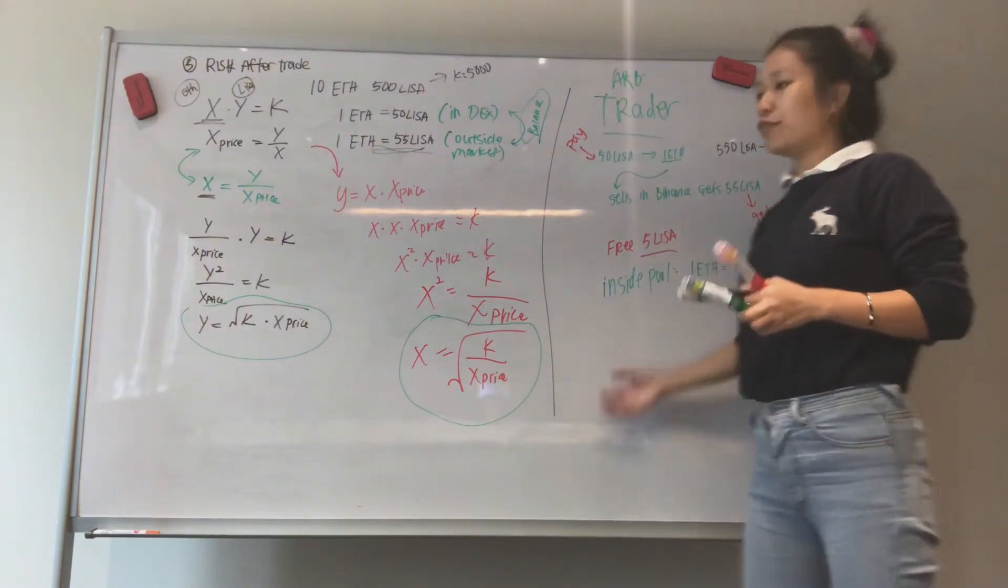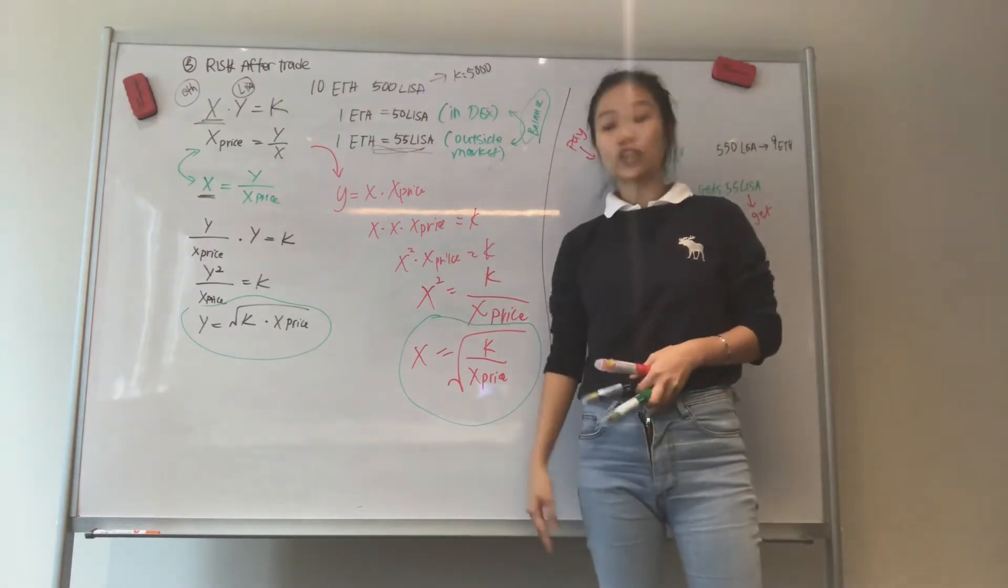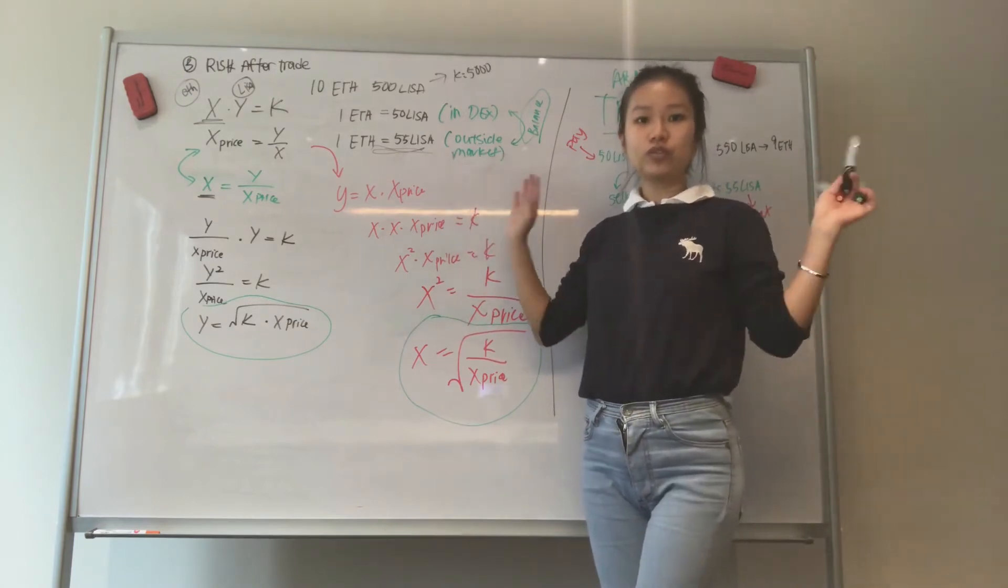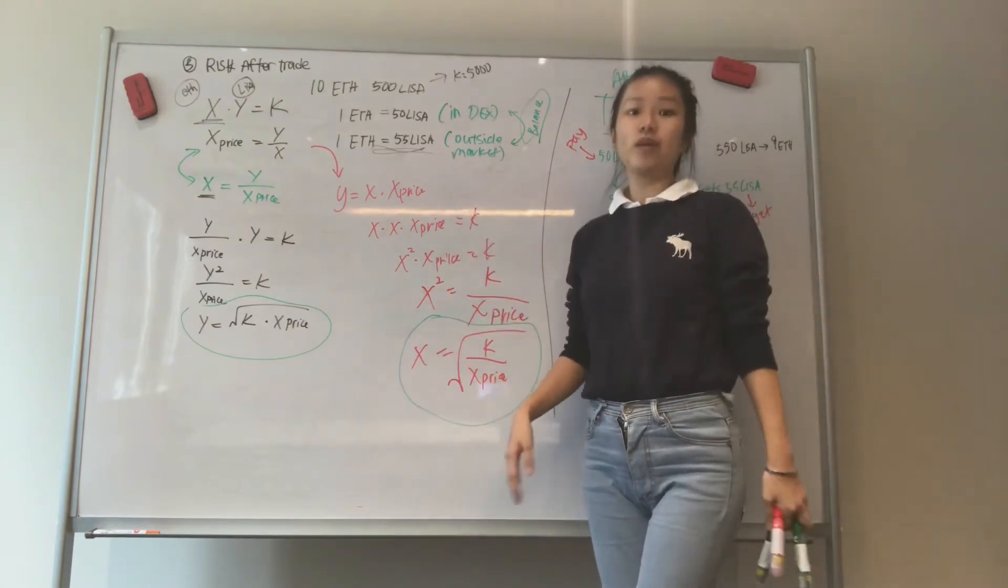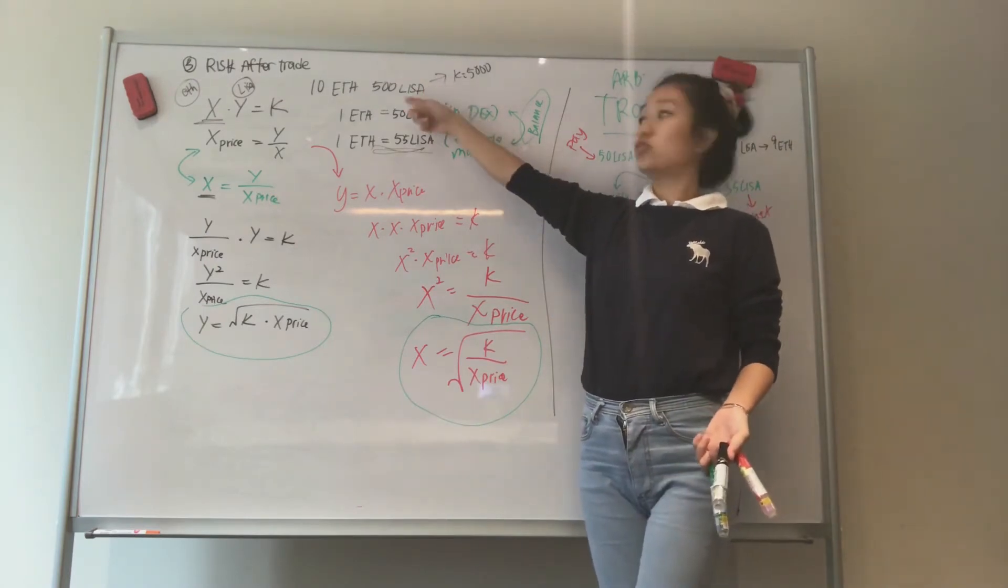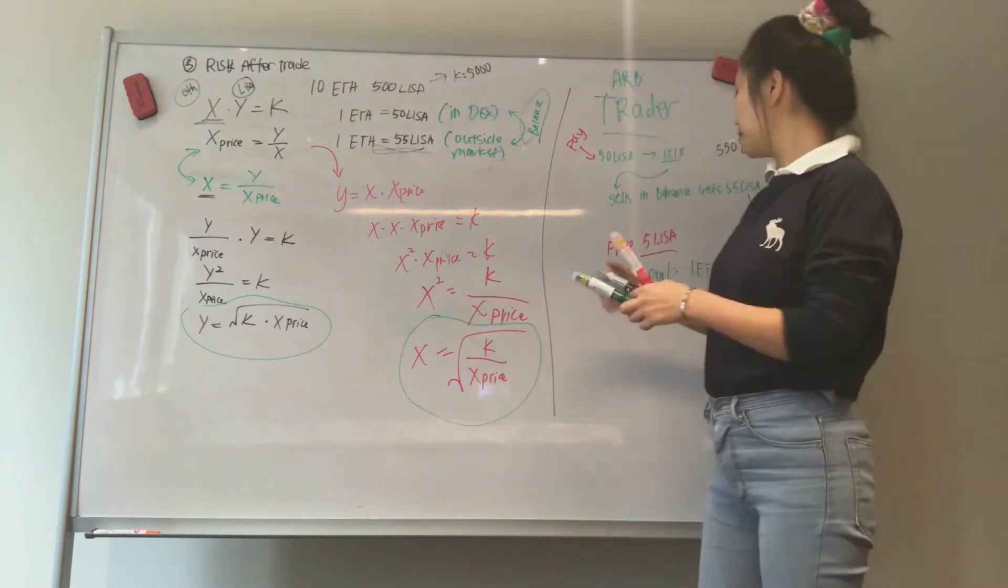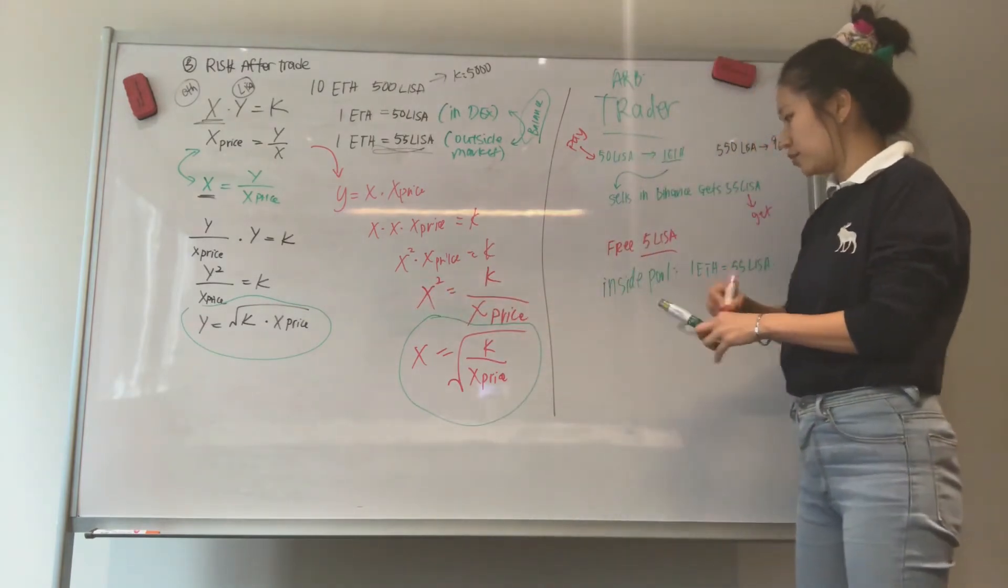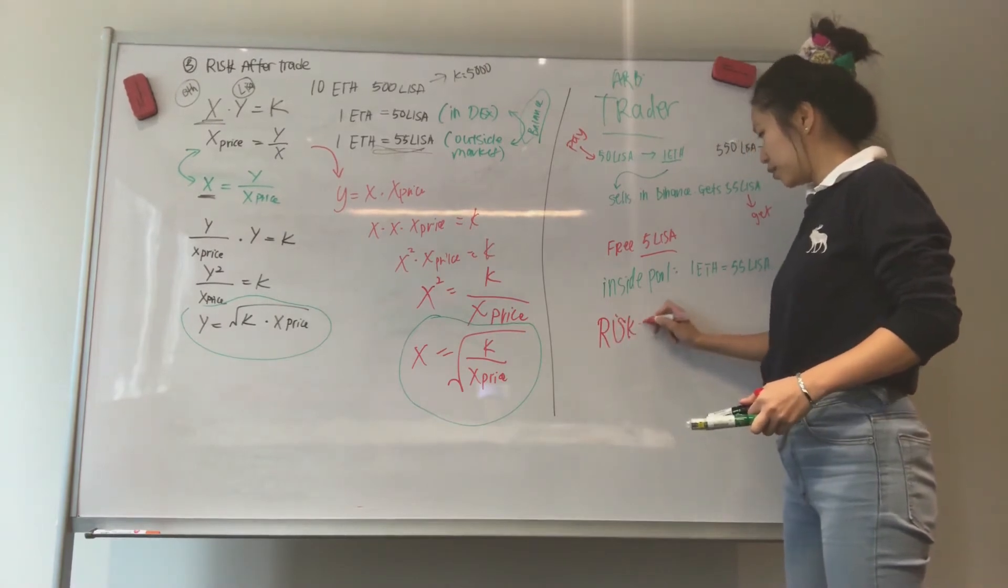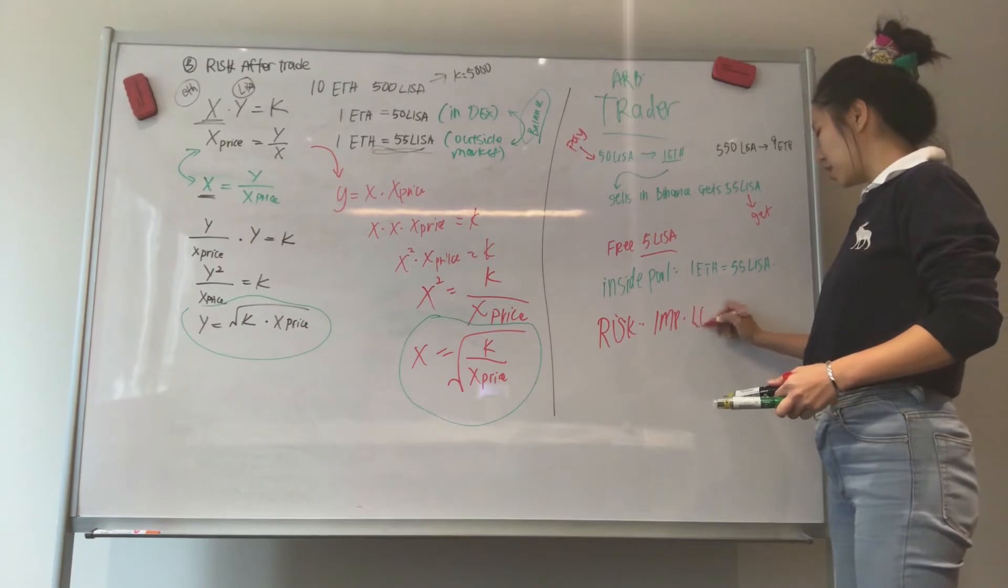So if you look at this situation, where's the risk? I put money in and people want to trade, let them be. It doesn't matter because when they trade, I still get to keep all these trading fees. But this risk over here right now, the risk in this situation is called the impermanent loss.